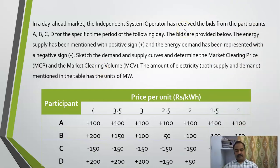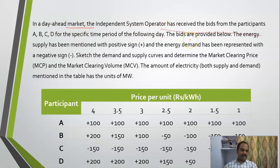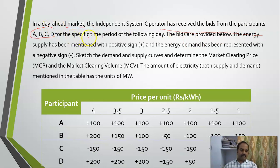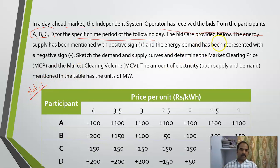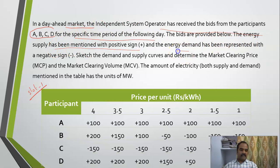This is the information which you will be receiving when you are going through a pool. It is a day-ahead market and the independent system operator has received bids from participants. There are four participants A, B, C, and D, and they have given the bids for a specified time period. Let us take slot number one. The energy supply has been mentioned with a positive sign and energy demand with a negative sign.